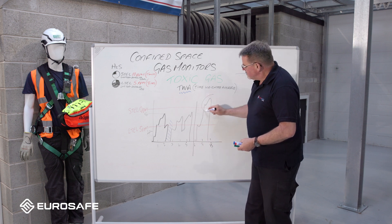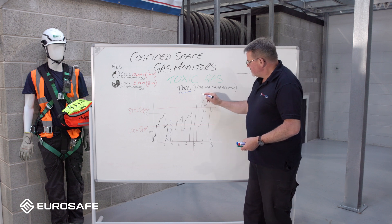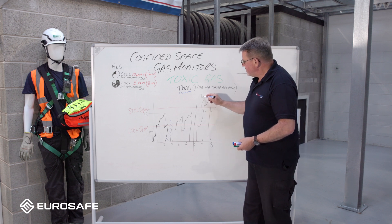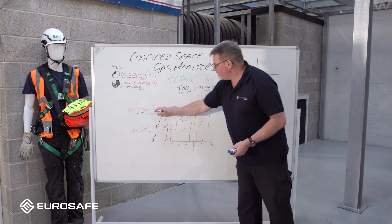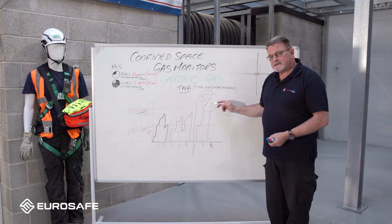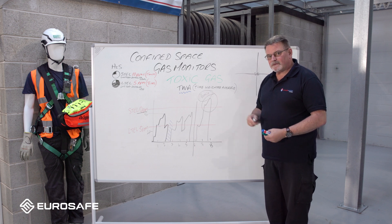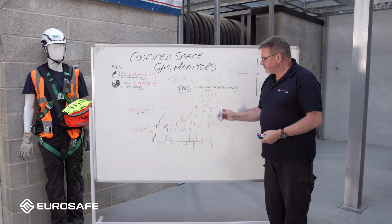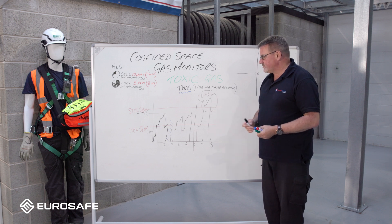As you see here, an example of possibly 16 minutes at ten parts per million — the alarm's gone off. But again, you've got peaks and troughs. So what we should be doing is getting out of the confined space because the alarm has gone off.